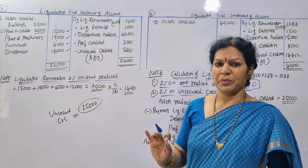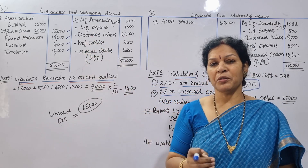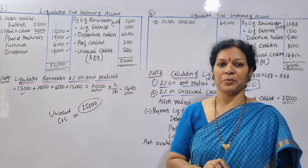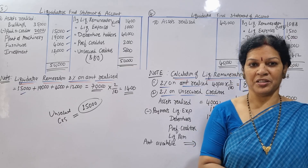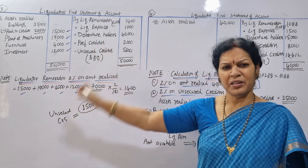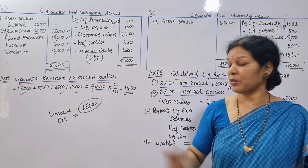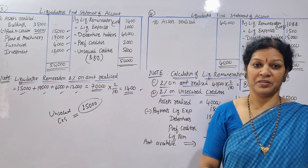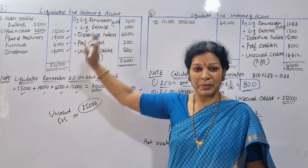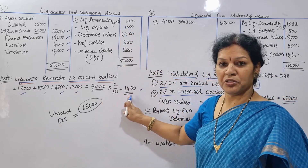Liquidator remuneration is 2% on the amount realized. The total amount realized is $35,000. So the liquidator remuneration comes to $1,400.